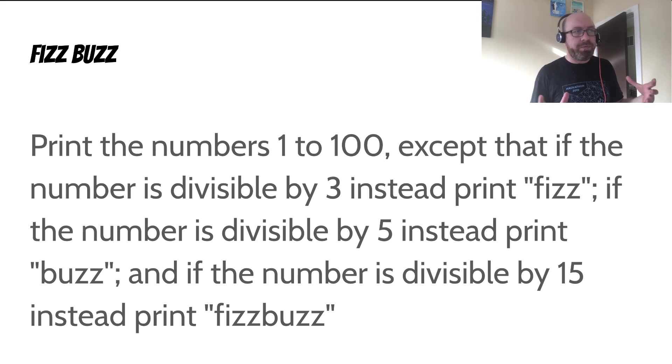I assume that most of you are familiar with FizzBuzz, but if you're not, it's the following problem. Print the numbers from 1 to 100, except that if the number is divisible by 3, instead print Fizz. If the number is divisible by 5, instead print Buzz. If the number is divisible by 15, instead print FizzBuzz.